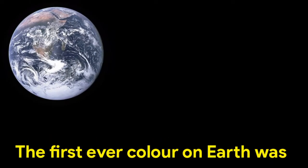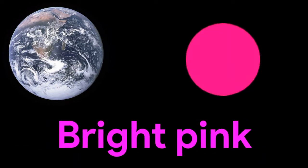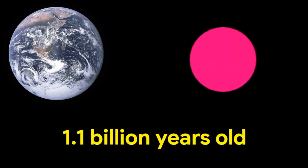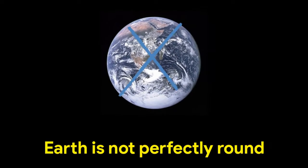The first ever color on Earth was bright pink at about 1.1 billion years old.